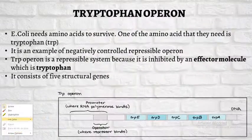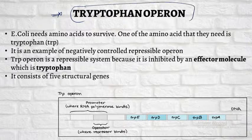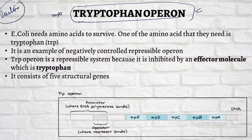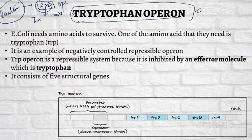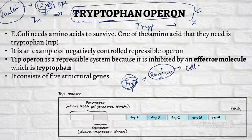We are starting off with our next operon — the trp operon — which is the most important topic for the fourth class of the free marathon series. When we look into the lac operon, it was an operon in which the presence of lactose led to the initiation of transcription of the Z, Y, and A genes. But in the trp operon, the presence of tryptophan would lead to the blockage of the tryptophan operon. Why? Because tryptophan is an important amino acid for our cell's metabolism.